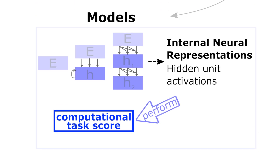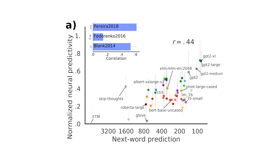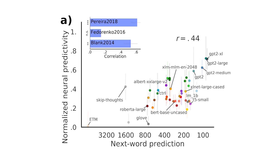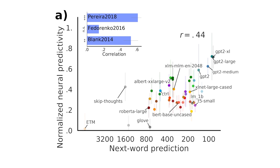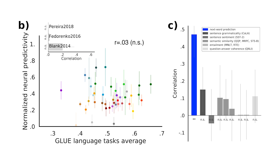A critical result is that models that do better at predicting an upcoming word in a text — which is a critical training objective for these models — also best capture human neural data. It's not simply that bigger models do better, because a random word embedding of the same dimensionality does quite poorly, suggesting it's something about the architecture and structure of the model. And it's not just any language task: judging how grammatically well-formed sentences are does not lead to a better fit to human neural data. This suggests that optimizing for predictive linguistic representations may be a shared objective of both biological and artificial language models.